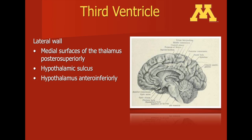The lateral wall of the third ventricle is bordered by the hypothalamus. This is extremely important, as injury to the hypothalamus can result in loss of one's ability to regulate temperature, one's drive for thirst, for food, and can be a life-threatening condition.